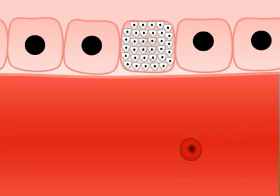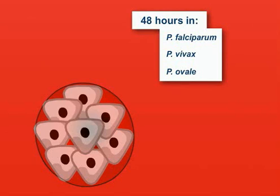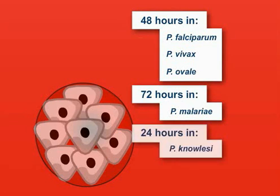When the schizont ruptures, the merozoites burst out of the liver into the bloodstream and invade red blood cells. Once inside the red blood cells, the parasites grow and divide. This process takes 48 hours for Plasmodium falciparum, Plasmodium vivax, or Plasmodium ovale, but takes 72 hours for Plasmodium malariae, and only 24 hours for Plasmodium knowlesi.